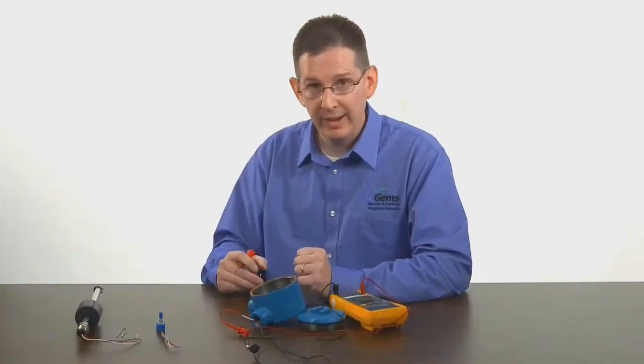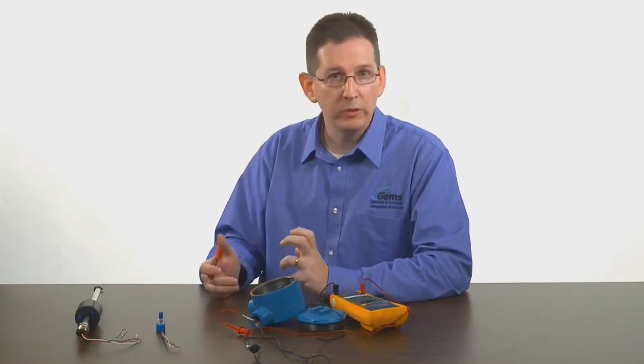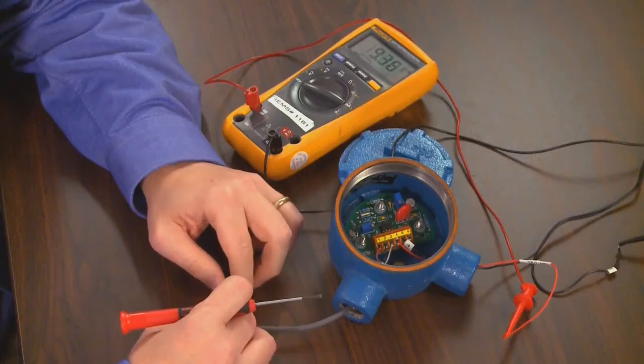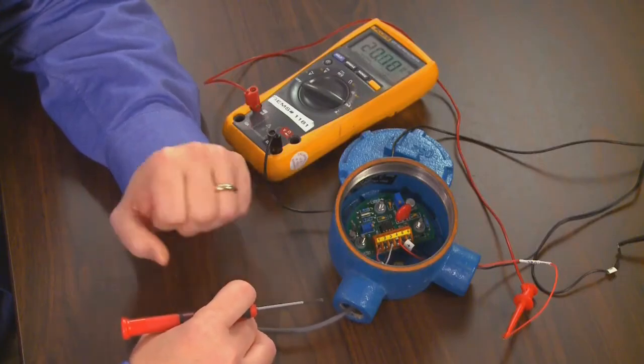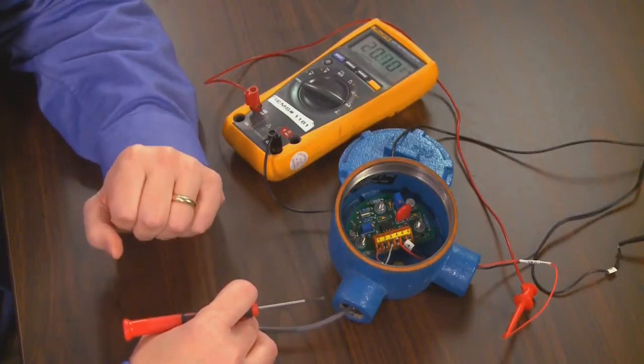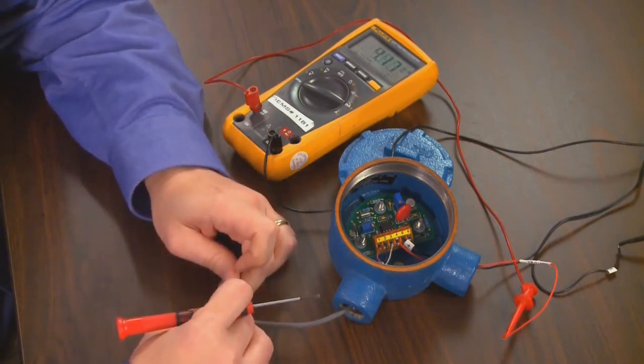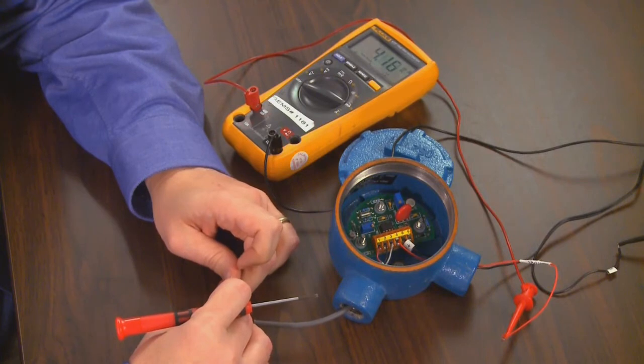Once you have your potentiometer connected we want to establish the direction of raising and lowering its output. Turning the potentiometer clockwise, you'll notice on the multimeter that the output goes towards 20 milliamps. Counterclockwise, the output drops towards 4 milliamps.